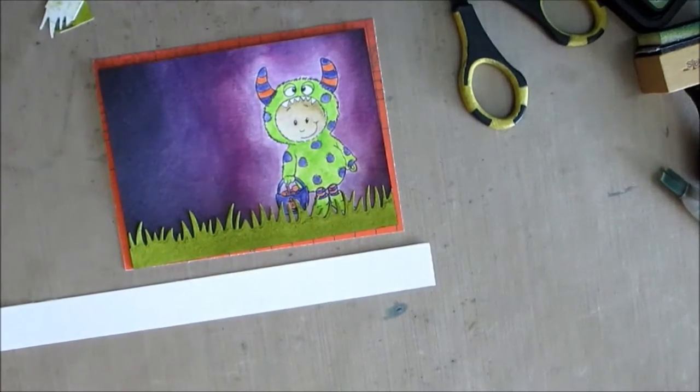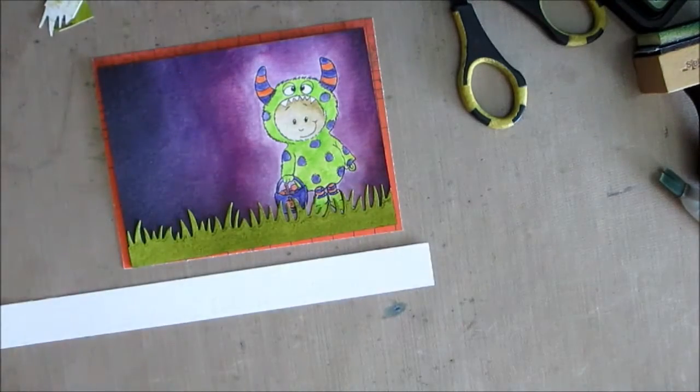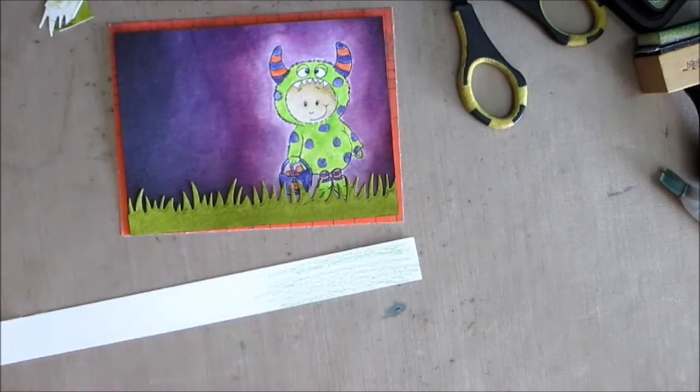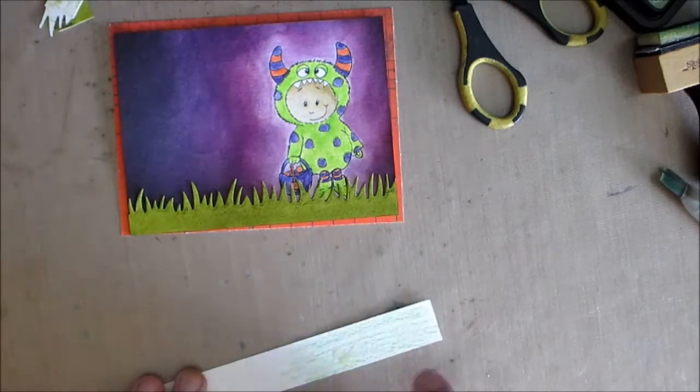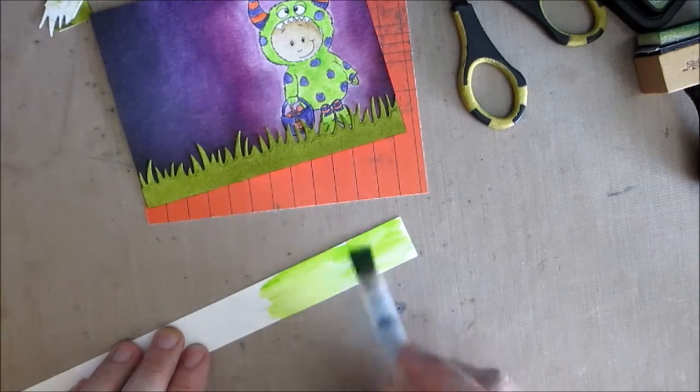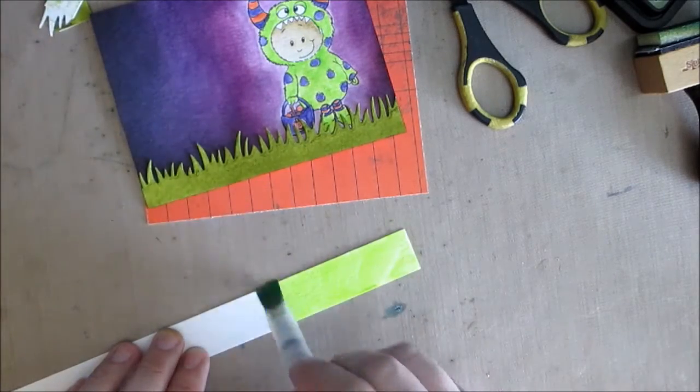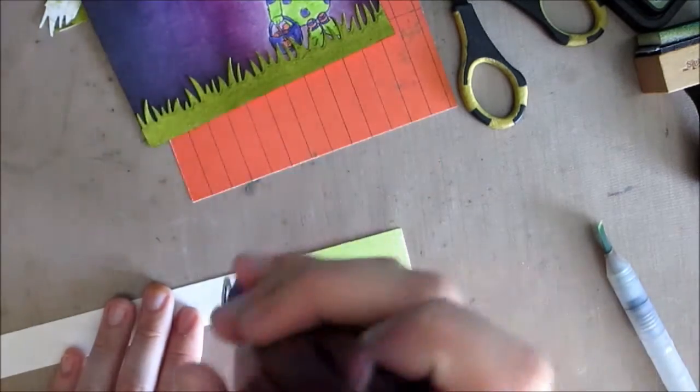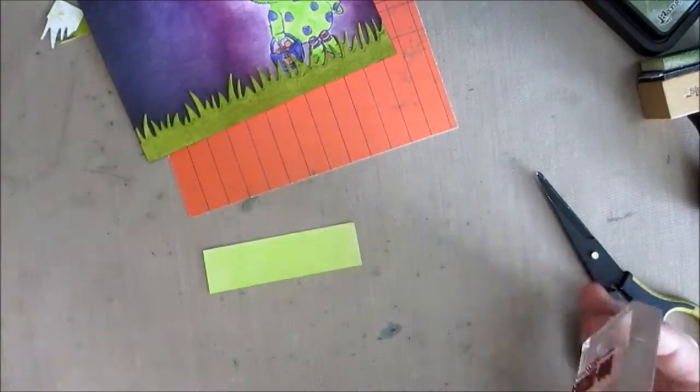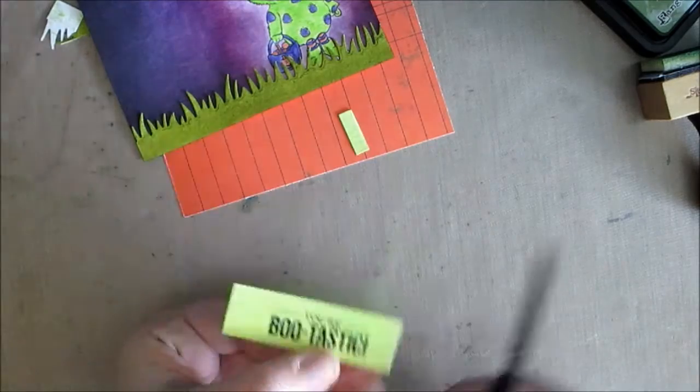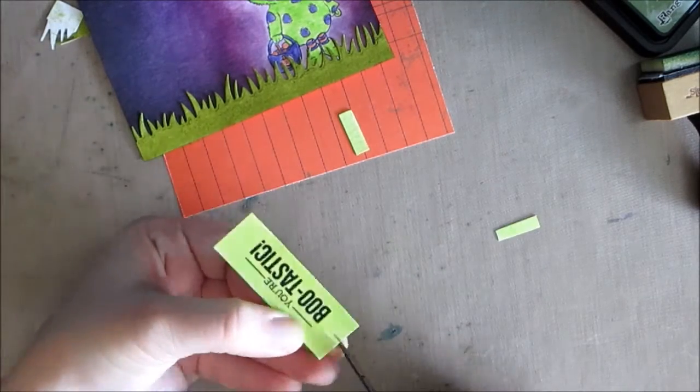I'm adding a little orange border to add that pop and to pull in the orange from the monster. Then I want to create a little banner for my sentiment but I want the colors to match and coordinate so I'm using the Inktense pencils again. I want to use the same green that I used in his costume so I just scribbled a little bit of that on and created my own little piece of solid colored paper that matches using watercolor paper again.